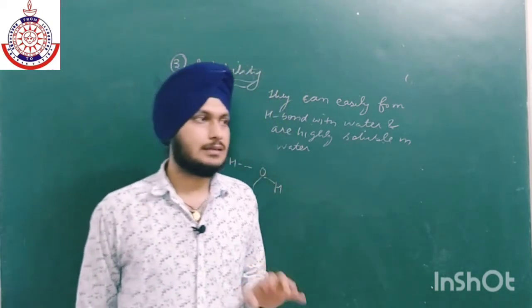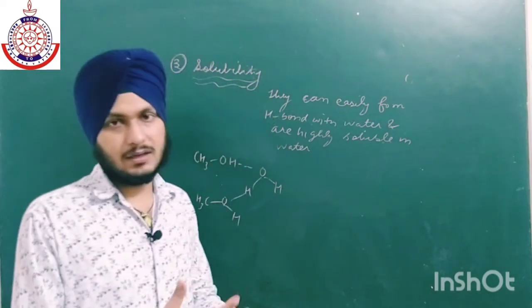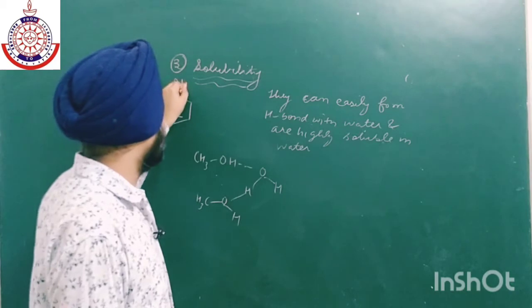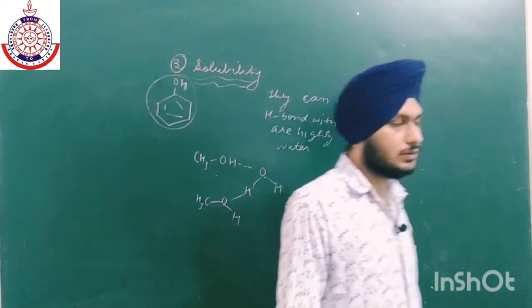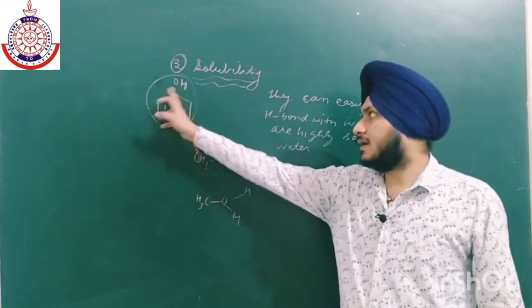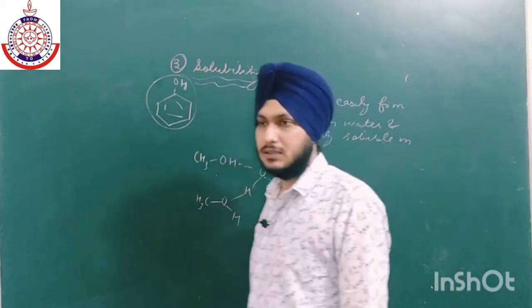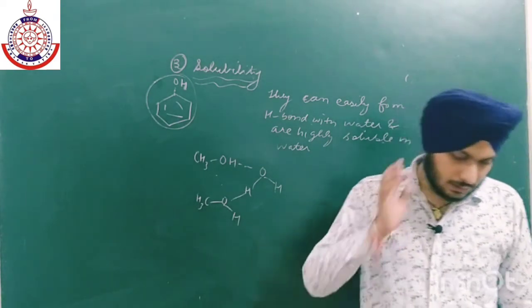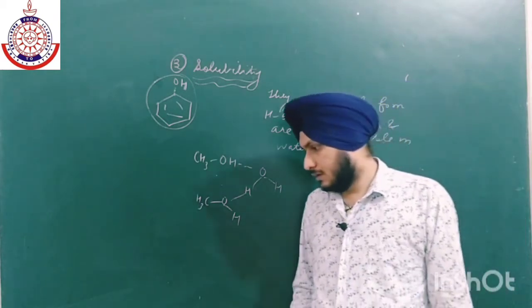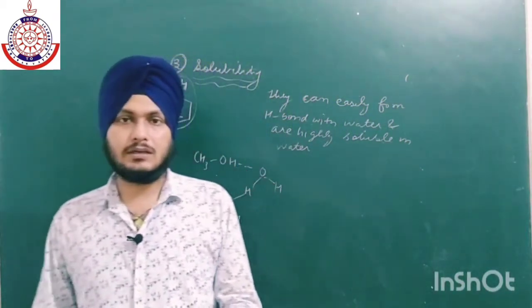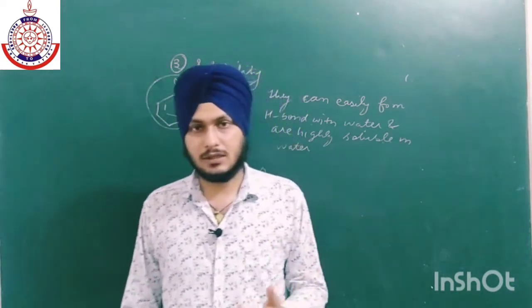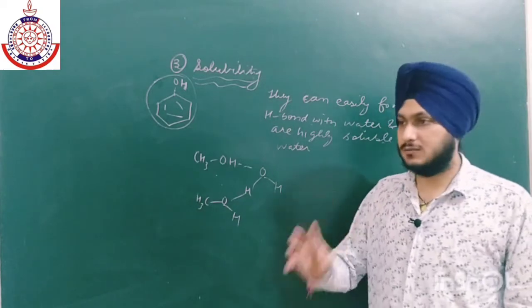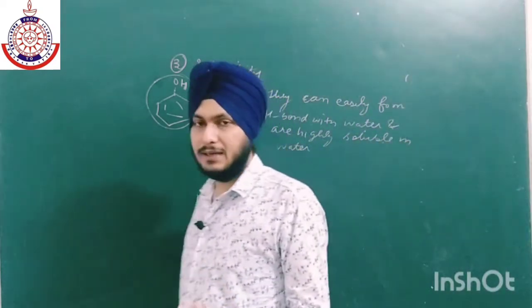Phenol has lower solubility than lower alcohols because it already has a large six-carbon ring as the hydrocarbon part. The larger the hydrocarbon part, the lower the solubility, because the hydrocarbon portion creates an obstacle to hydrogen bonding with water. These are the three main physical properties: physical state, boiling point, and solubility.